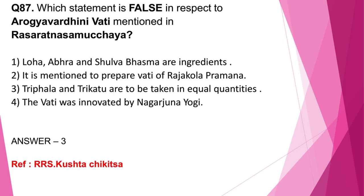Question number 87: Which statement is false in respect to Aarogya Vardhinivati mentioned in Rasa Ratna Samuchaya? Option 1: Loha, Abhra and Shulbha Bhasma are ingredients — correct. Rasa, Gandha, Loha, Abhra, Shulbha Bhasma are present; the main ingredient is Tikta, that is Katuki. Option 2: Vati of Raja Kohla Pramana is to be prepared — correct. Option 3: Triphala and Trikatu are to be taken in equal quantities — wrong, as Trikatu is not an ingredient. Option 4: The vati was innovated by Nagarjuna Yogi — correct. So the correct answer is option 3.